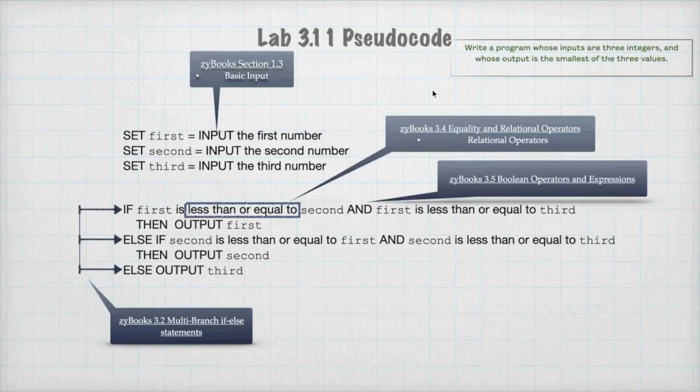If second is less than first, and second is less than or equal to third, then second is the largest number. Otherwise, third has to be the largest number. So this is a relatively small program, but it requires the understanding of Boolean operators.